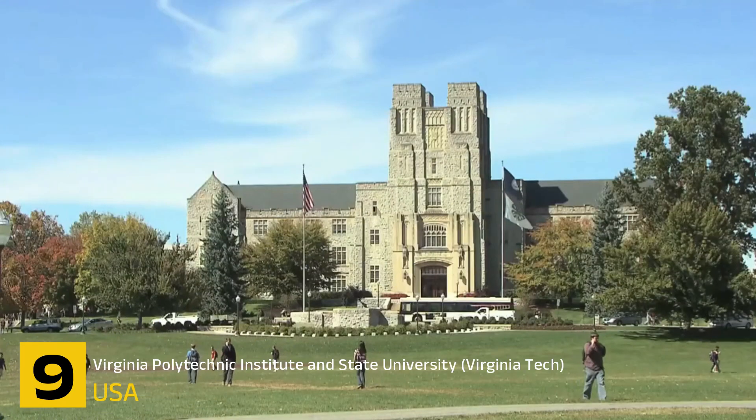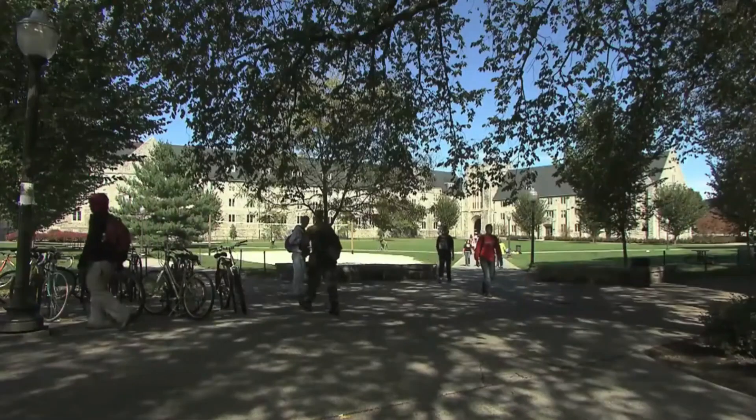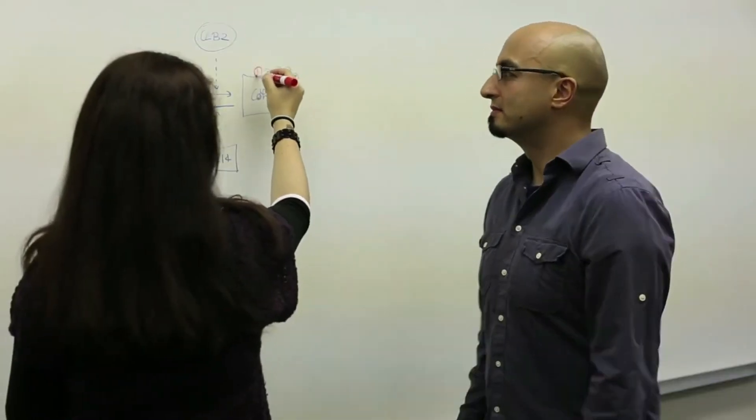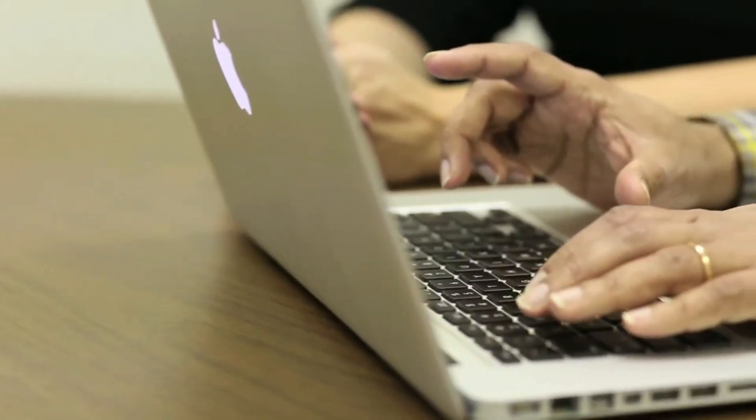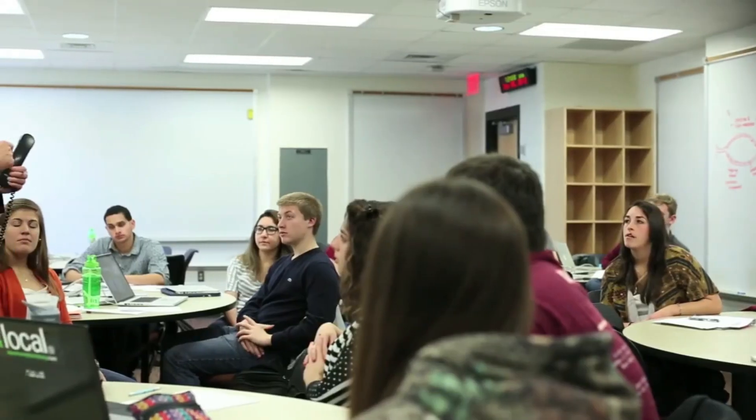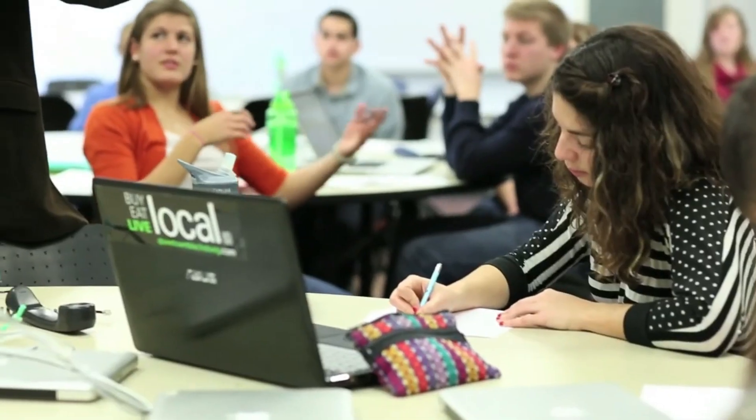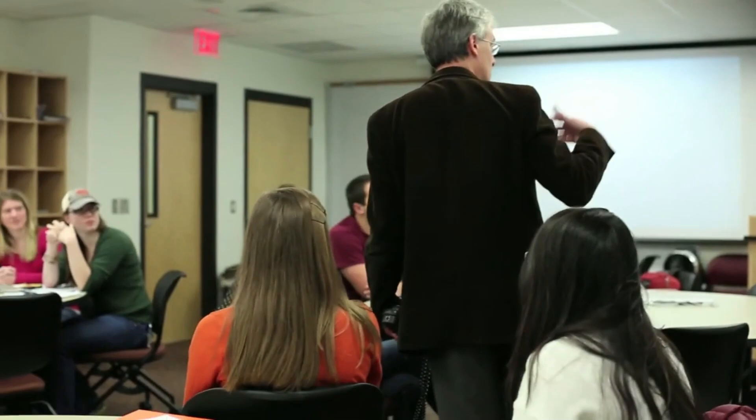Number 9. Virginia Polytechnic Institute and State University, Virginia Tech. Virginia Tech, located in Blacksburg VA, is a renowned institution that holds a strong national reputation. The university's civil and structural engineering program emphasizes a hands-on approach to learning, providing students with practical experience through labs, fieldwork, and research projects. This focus on real-world application allows students to develop the skills and knowledge necessary to tackle complex engineering challenges.